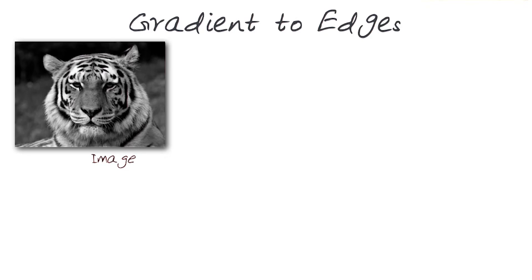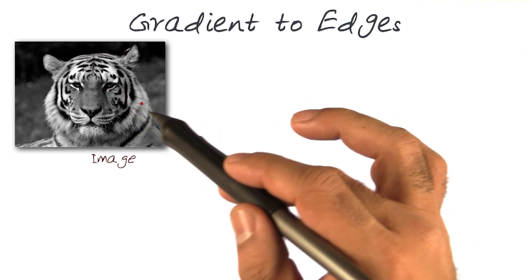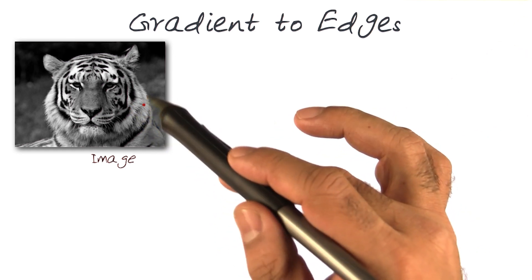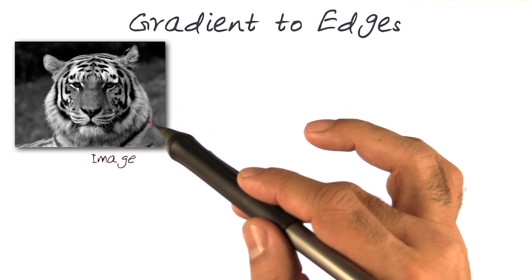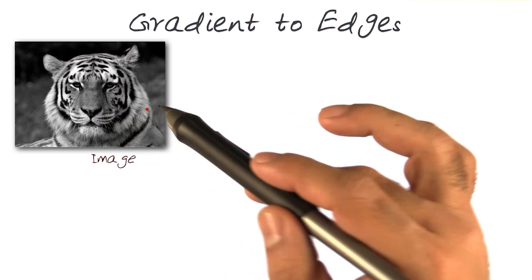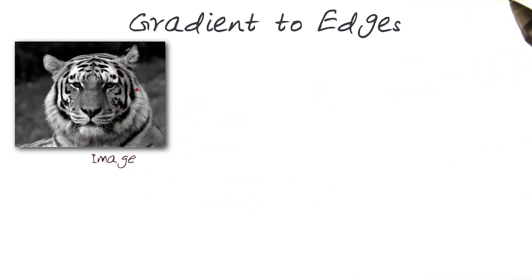Let's look at the whole pipeline of how we would go from an image to extract an edge image out of it. An edge image would basically showcase where most of the contrast changes are in an image, and best represents the changes in the spatial x and y of an image like this.